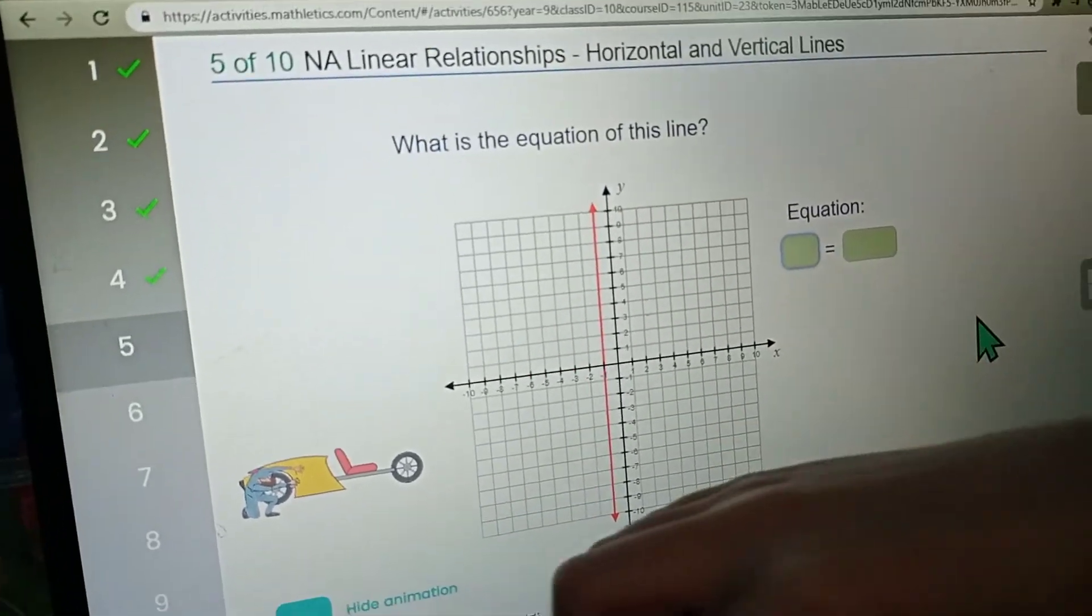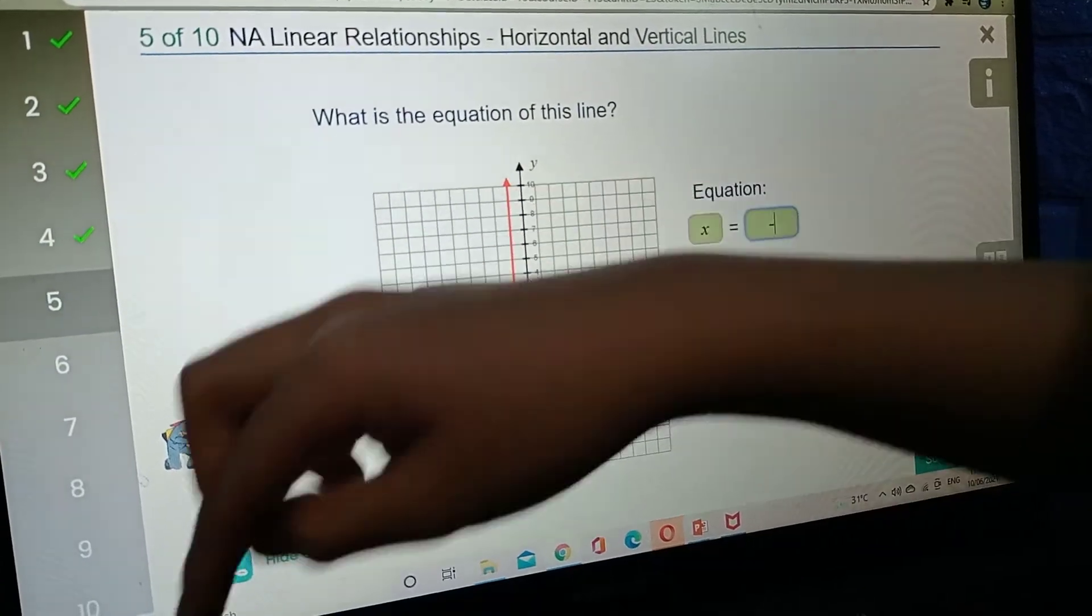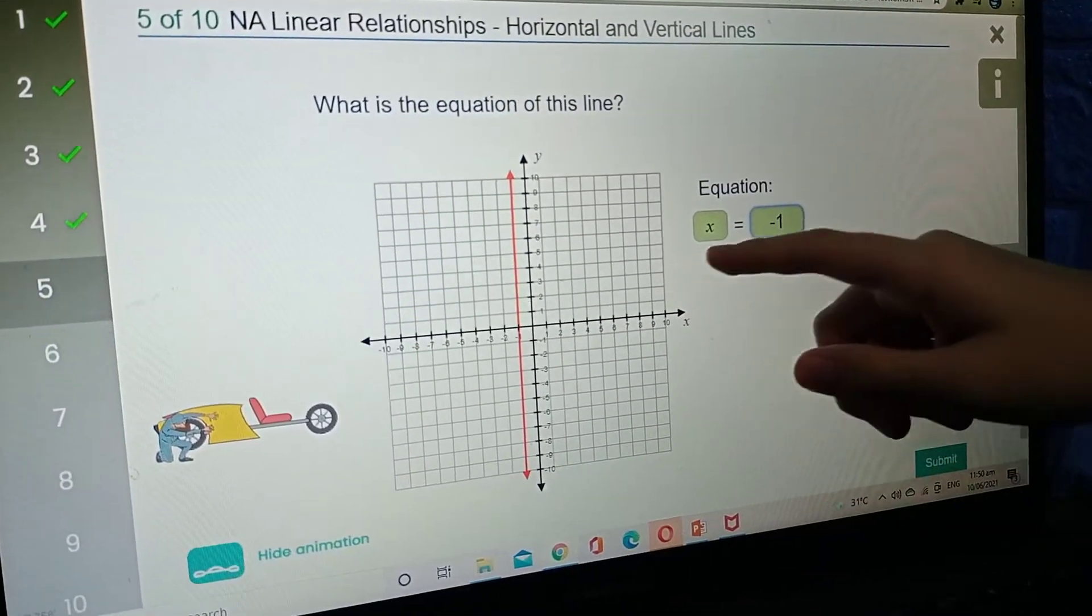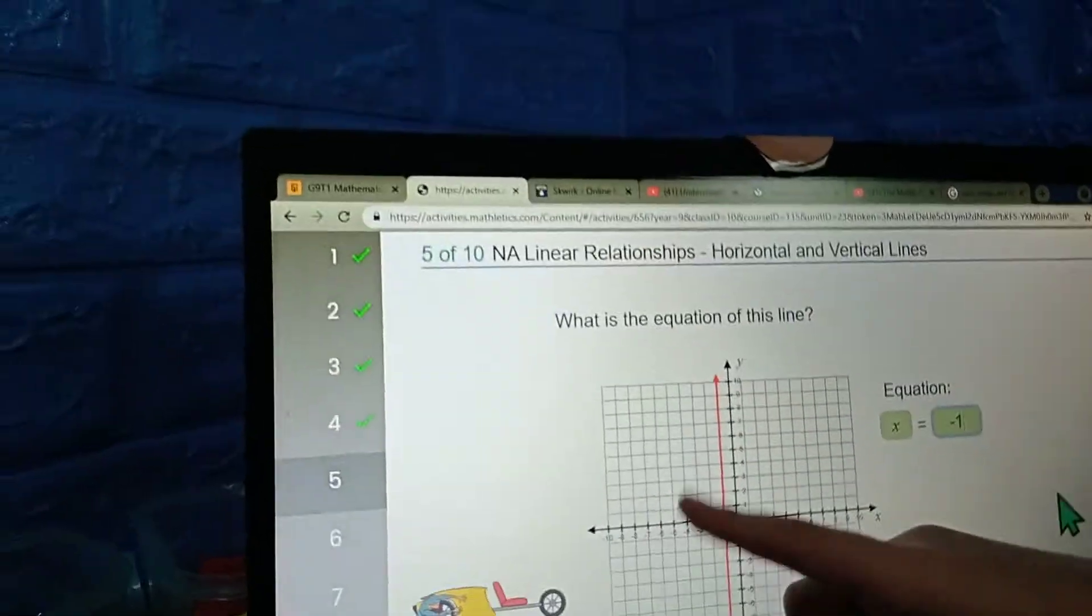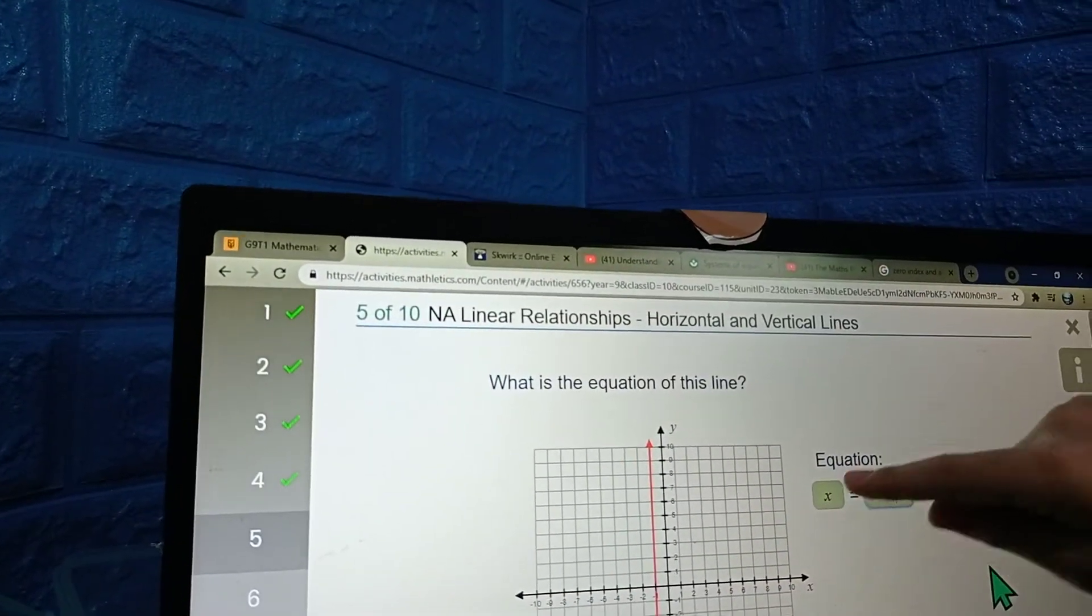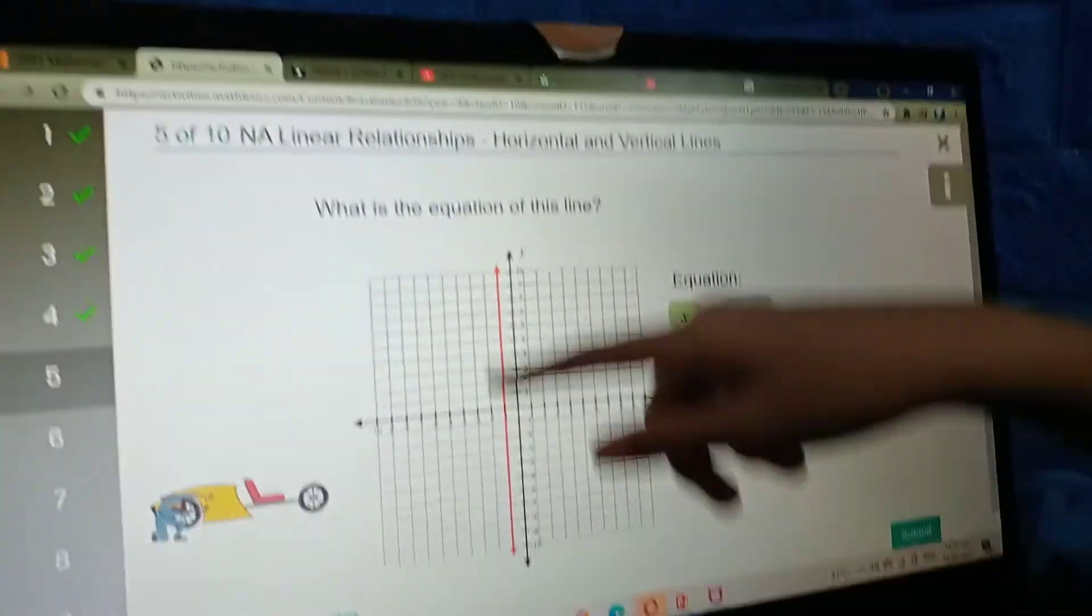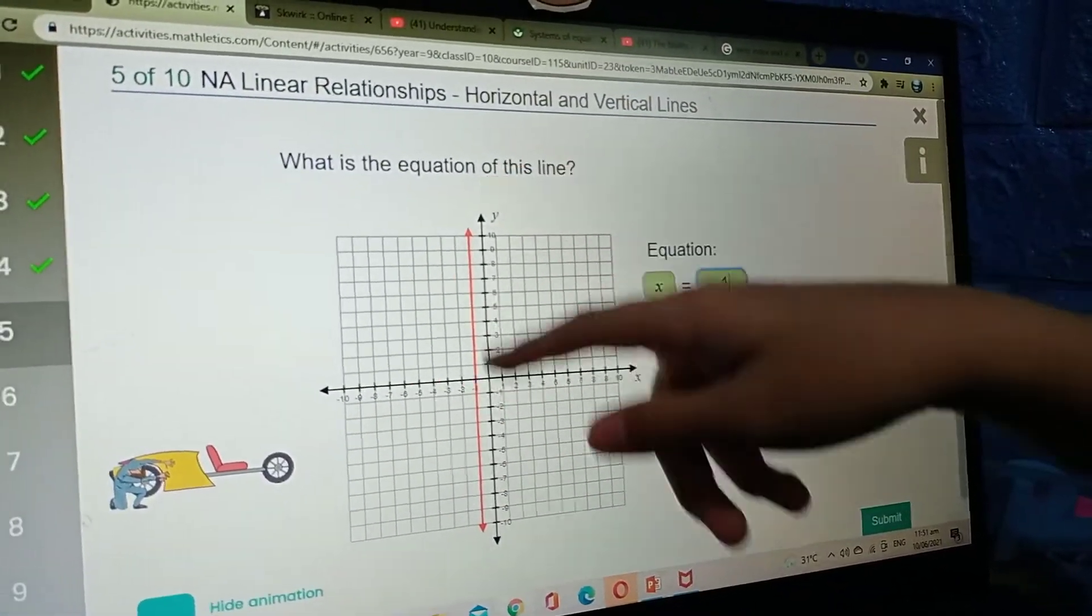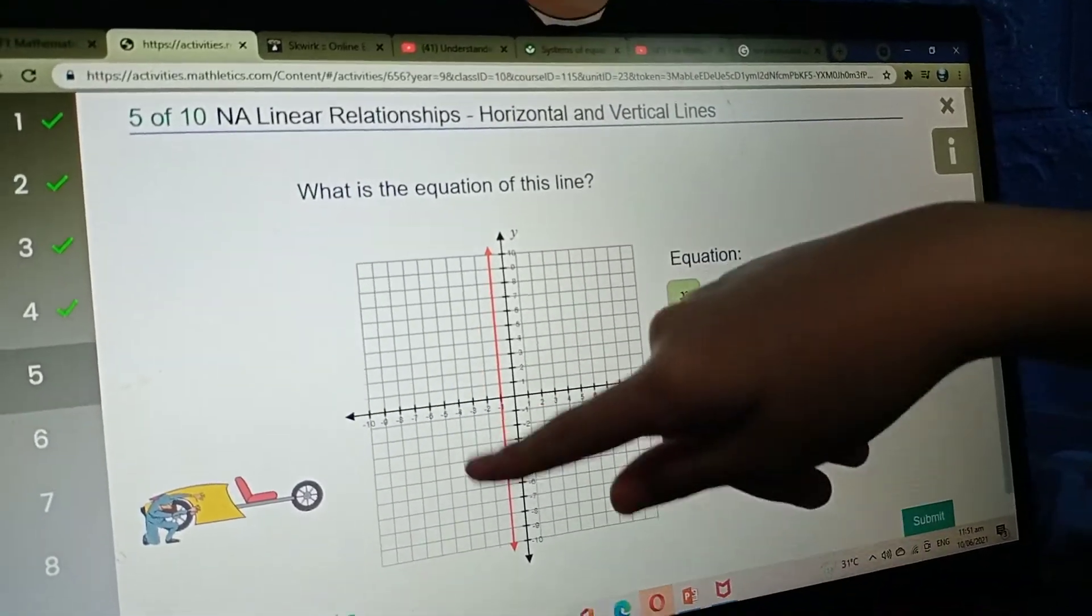So this is x equals negative 1, of course. Here, x equals negative 1 like this. This is the lane. Because I know whenever it's an x, it's just only one x equals a number, a certain number like that, so it will look like this.